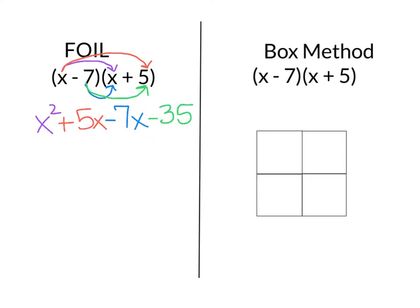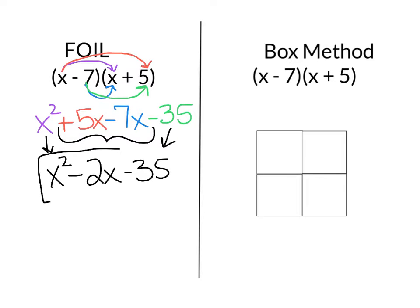And again, once I have that multiplied, I have to ask myself what can I combine. So I bring my X squared down — there's nothing to combine it with. This positive 5X and negative 7X are like terms, and I can combine them. So if I have a positive 5X minus 7X, that's going to leave me with a negative 2X, so I put minus 2X. And then I bring my minus 35 down. So remember, FOIL stands for First, Outside, Inside, and Last, which is what I've demonstrated on that left side. Now let's do that same problem but with the box method.